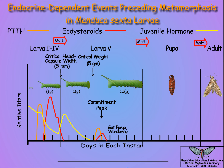Ecdysteroids also stimulate purging of the gut contents and the onset of wandering behavior, during which the larvae looks for a suitable protected location for pupa formation. At the end of wandering, a second release of prothoracicotropic hormone stimulates another release of ecdysteroids to initiate the pupal molt.